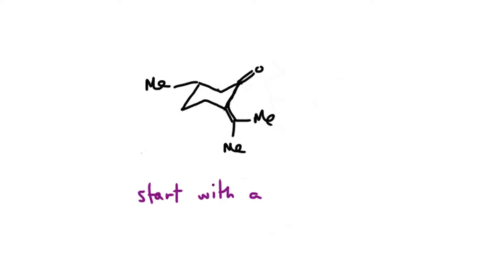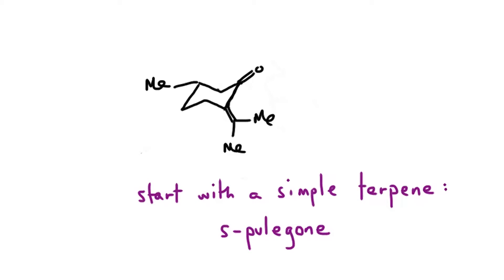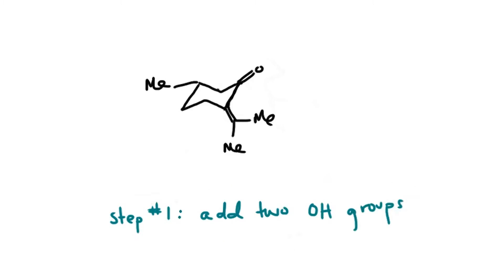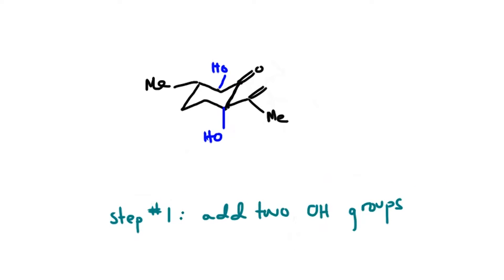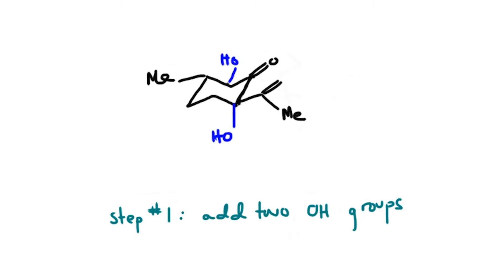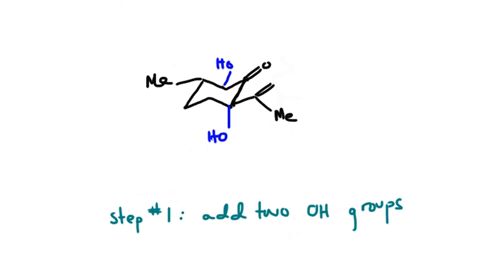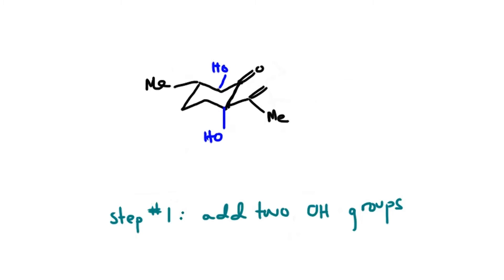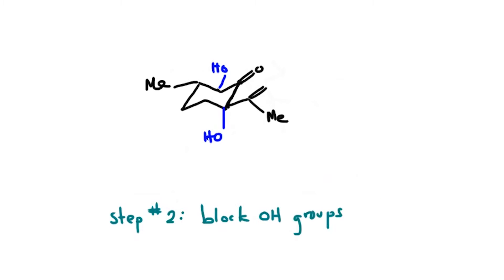We start with a much simpler molecule known as spulogone. This is a terpene that's readily available. In the first step of the synthesis, we invented a new dihydroxylation reaction, which allows us to take this molecule that shares some of the features of ryanodol and incorporate the last two hydroxyl groups found on the C ring. We then protect or block them so that they won't interfere with subsequent chemical reactions.